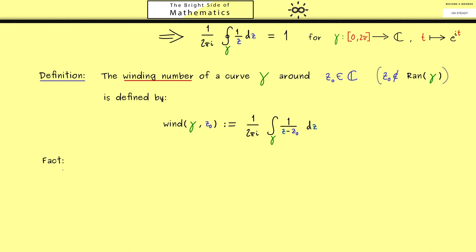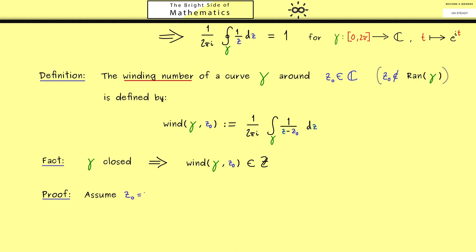Let's formulate an important fact for closed curves separately. If gamma is closed, we want to show that the winding number wind(γ, z₀) around the point z₀ is an integer — it is a well-defined complex number, but in this case it is also an element of ℤ. To make the proof simpler, we shift the fixed point z₀ to the origin, which is without loss of generality since it is just a simple substitution.